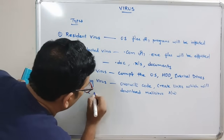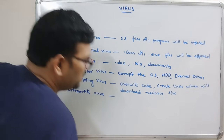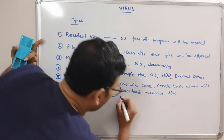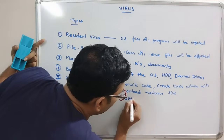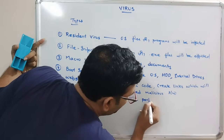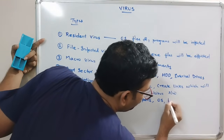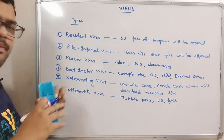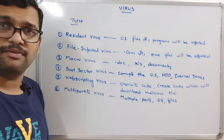Next is the multipartite virus. A multipartite virus infects multiple parts of our program — it could be the OS, files, or any other part. It affects multiple parts of our system at once.